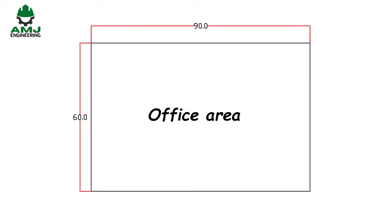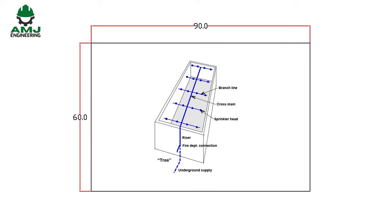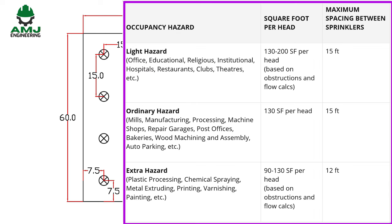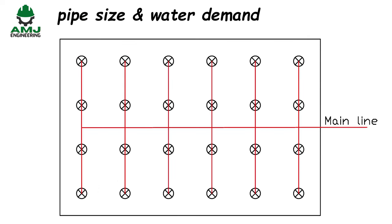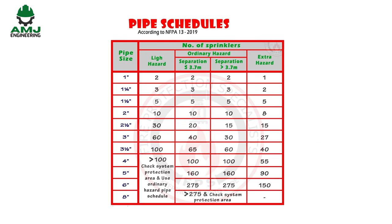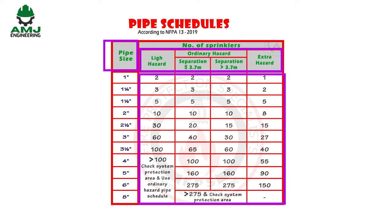Let us take an example: an office area of 90 by 60 feet. Assume we want to design a tree sprinkler system. Being a light hazard, the maximum spacing between sprinklers is 15 feet, and the distance between sprinklers and walls is no more than half the distance between sprinklers. The water demand shall be determined by either the pipe schedule method or the hydraulic calculation method. According to NFPA 13, a pipe schedule system is defined as a sprinkler system in which pipe sizing is selected from a schedule determined by occupancy classification, allowing a given number of sprinklers to be supplied from specific pipe sizes.